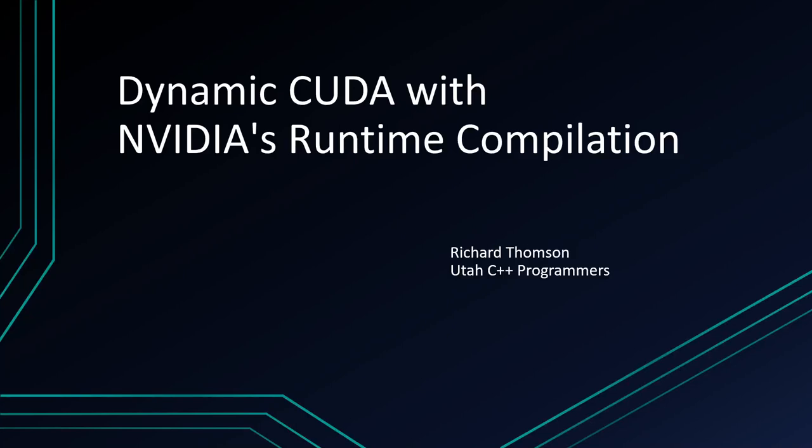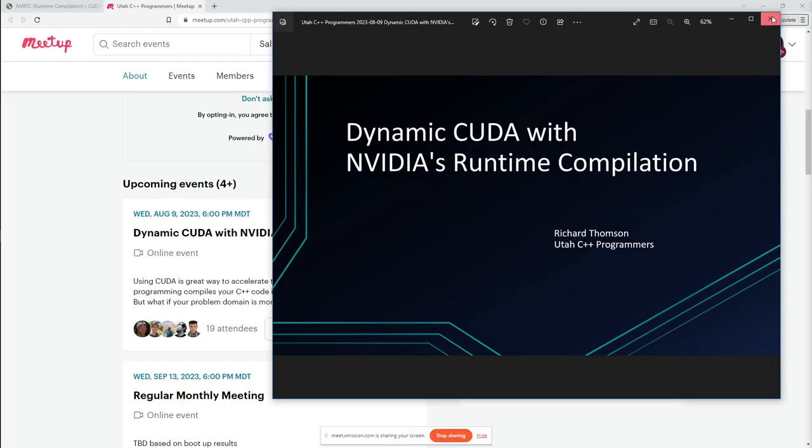This month we're going to look at how to do dynamic CUDA with NVIDIA's runtime compilation library. Before, we talked about how to do basic CUDA using CMake. CMake has CUDA language support built-in, so you don't have to teach it how to compile CUDA source files. If you just add a .cu source file to your CMake project with CUDA language support enabled, it'll know to invoke NVCC, the CUDA compiler, and at CMake configure time it'll locate the CUDA compiler to make sure that language support is enabled.